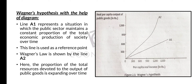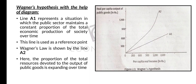Wagner's actual law is shown by line A2, where the proportion of total resources devoted to the output of public goods is expanding over time. What Wagner says is that when there is an increase in GDP, there is a more than proportional increase in public expenditure. So the relationship between economic growth and the public sector is not merely proportional — there is a more than proportional increase in public expenditure when there is economic growth.